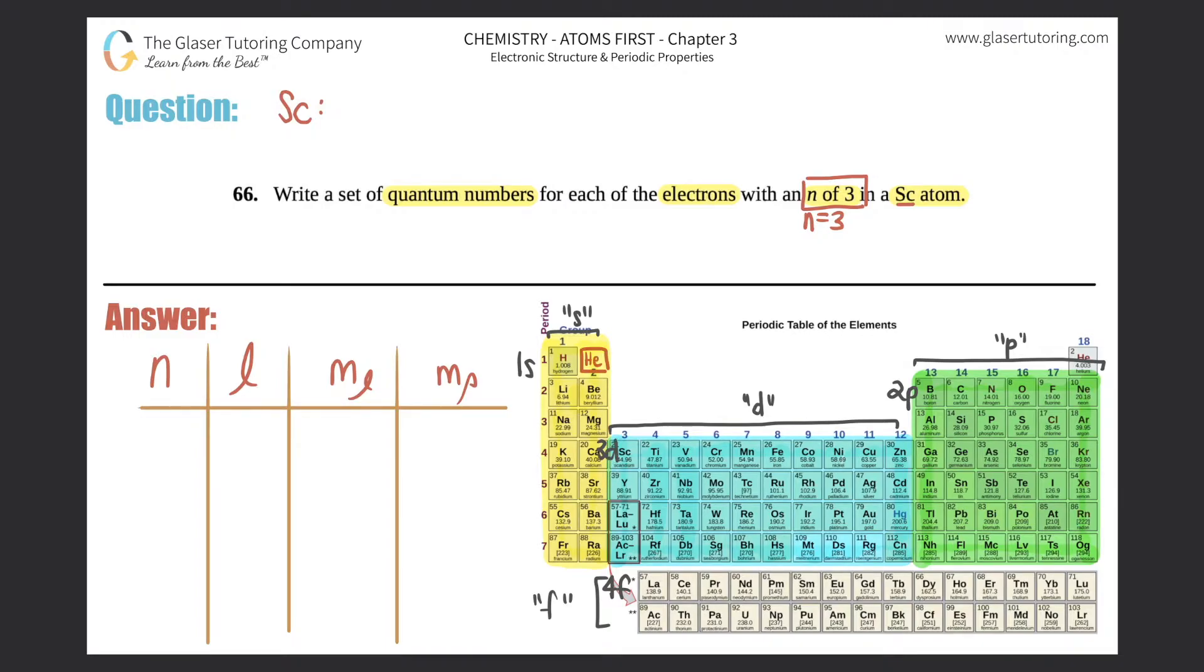So let's draw it out. I gotta start with 1s², then I'm over here, so that's 2s², then I'm over here, so that's 2p⁶, then I drop down over here, so that's 3s², then I'm over here, so that's 3p⁶.